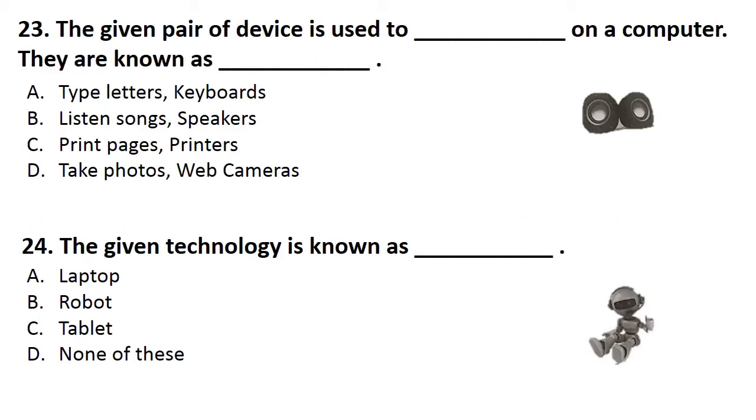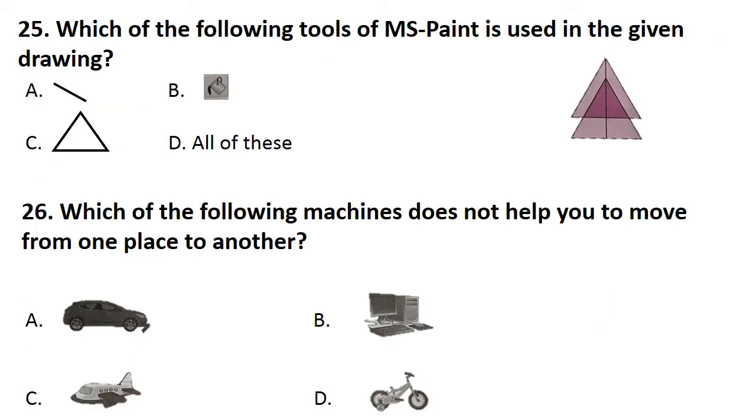The given pair of device is used to dash on a computer. They are known as dash. Answer is option B. Question number 24, the given technology is known as - answer is option B, that is a robot. Which of the following tools of MS Paint is used in the given drawing? Answer is option D, all of these.